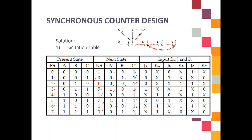For the J and K inputs, you must remember the excitation table. For example, for variable A: to find the value of JA and KA, you need to compare between present state A and next state A. For example: present state A = 0, next state A = 0 gives 0x. Present state A = 0, next state A = 1 gives 1x. Present state A = 1, next state A = 1 gives 1x.